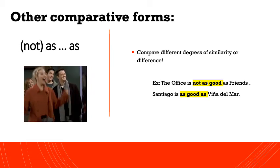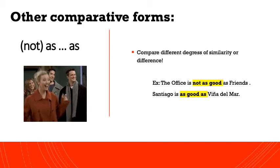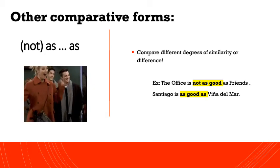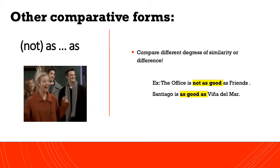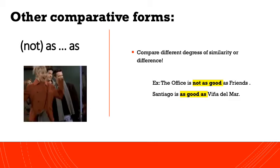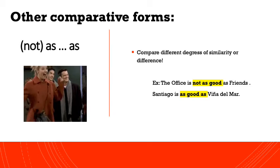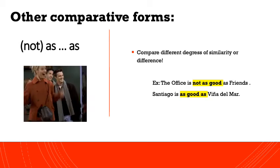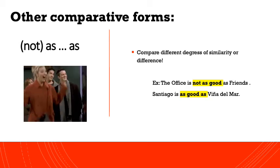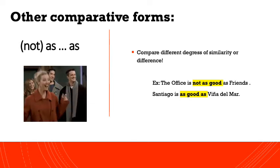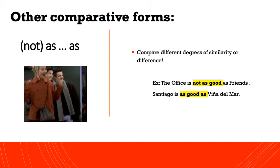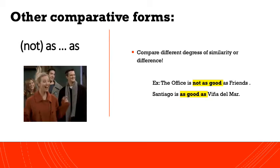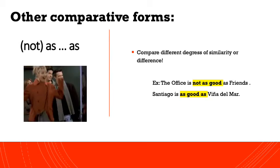Another comparative form is 'not as...as' or 'as...as,' which is really useful when we want to compare different degrees of similarity or difference. For example, here we have The Office and Friends. The sentence says 'The Office is not as good as Friends' — we are comparing how good the shows are. The second sentence says 'Santiago is as good as Viña del Mar,' meaning they are practically the same.